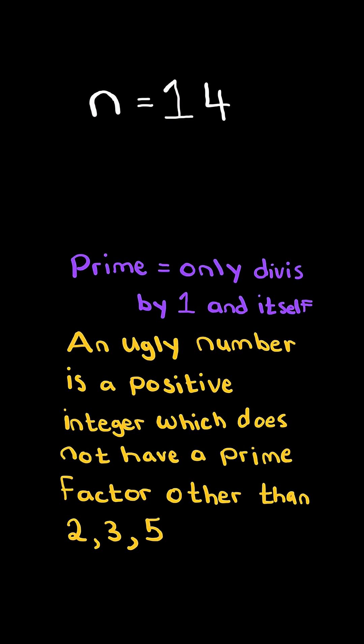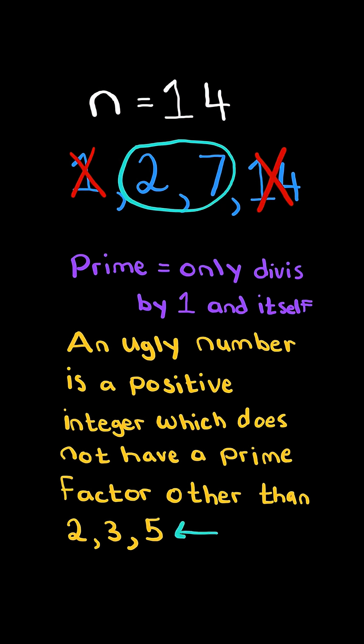Consider this new example and the factors of n. Like before, 1 is not a prime number and similarly, 14 is not a prime number. So the prime factors of n are simply 2 and 7. But 7 is not in an ugly number's prime factors, which means n is not an ugly number.